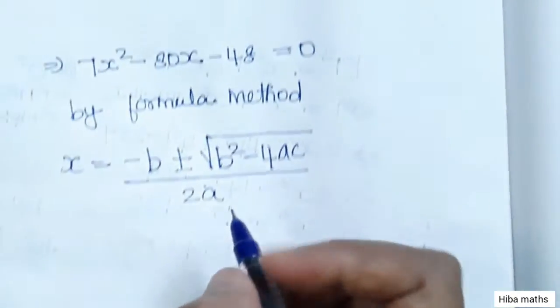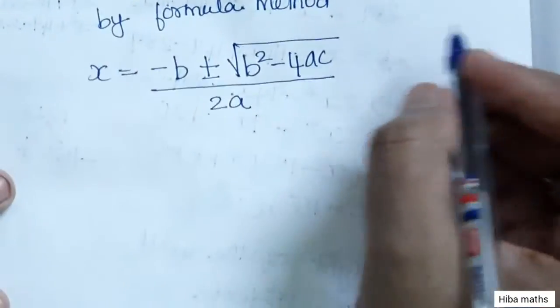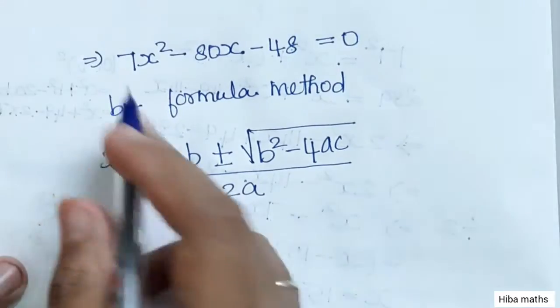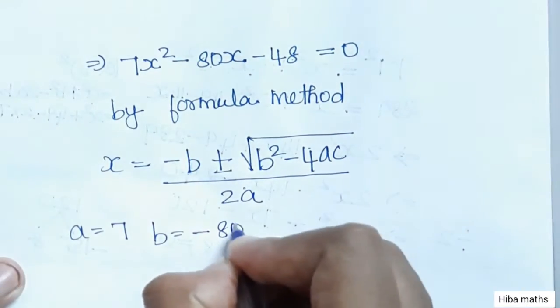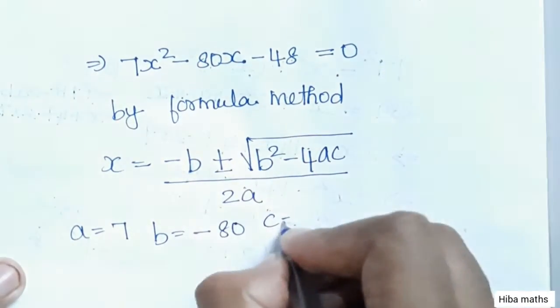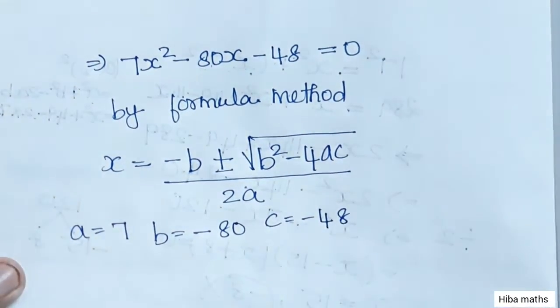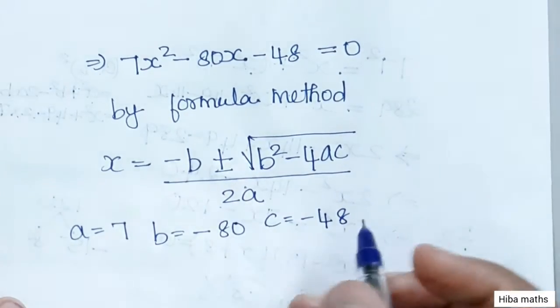Now identifying a, b, c: a equals 7, b equals -80, c equals -48. We need to substitute these values into the formula.